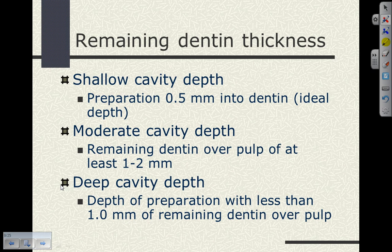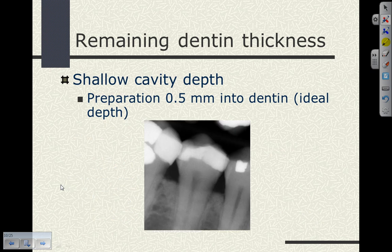When we define moderate and deep cavity preparations, we're defining them based upon the remaining dentin over the pulp. A shallow preparation refers to depth relative to the dentin itself — we've gone through the enamel and we're barely into dentin. Looking at a shallow cavity preparation on this cropped bitewing radiograph, you can see that the pulp is a significant distance away from the composite resin that's been placed. This preparation is ideal — half a millimeter into dentin.